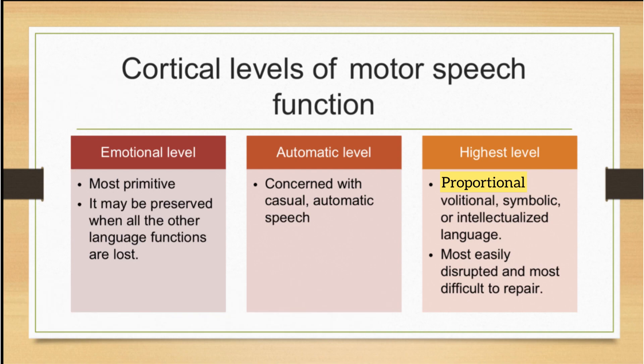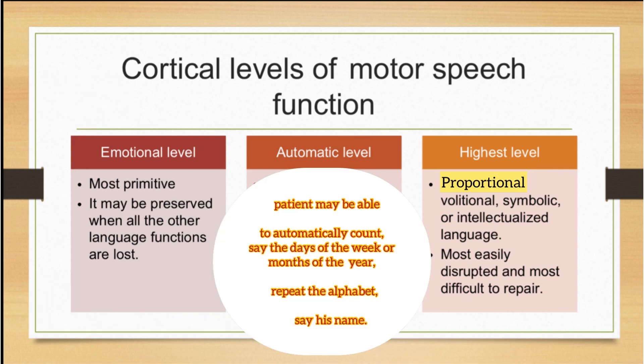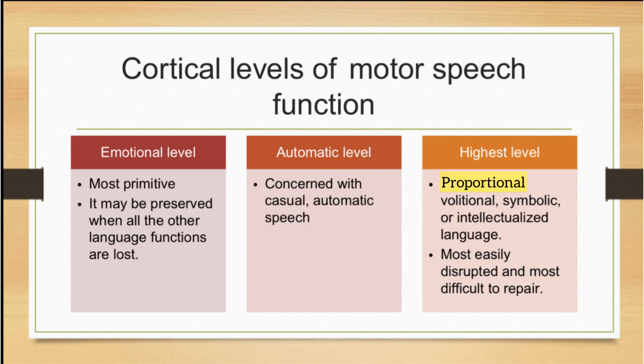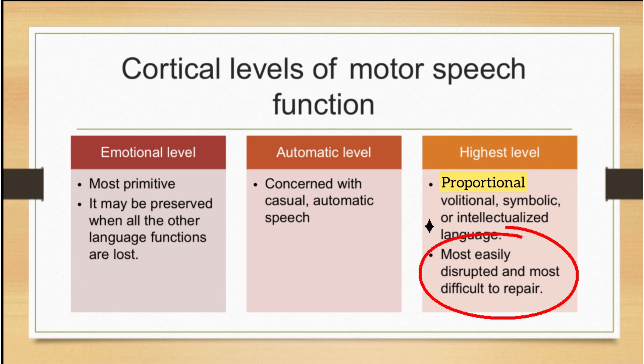The second is the automatic level, which is concerned with casual and automatic speech. The patient may be able to automatically count, say the days of the week or months of the year, repeat alphabets, and sometimes even say their name. The third and highest level is concerned with proportional, volitional, symbolic and intellectualized language, and is the most difficult to repair of all areas of language.